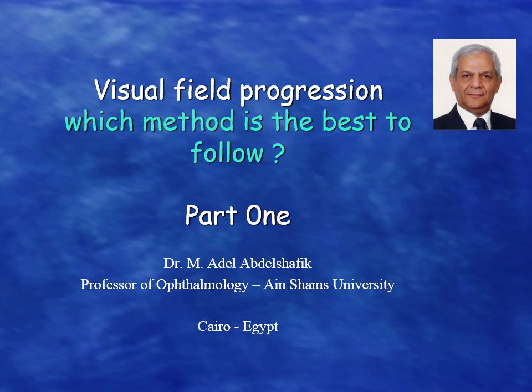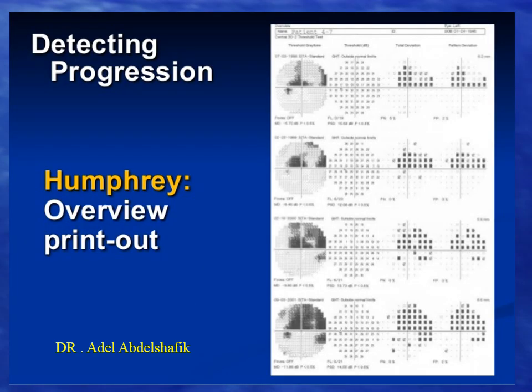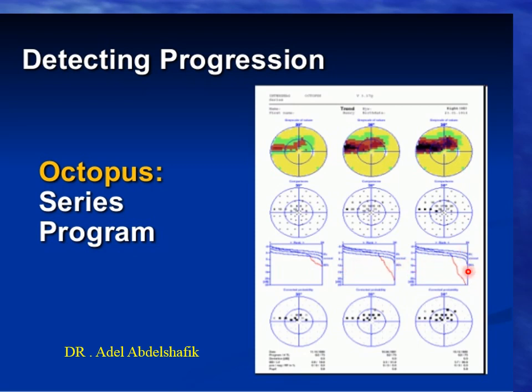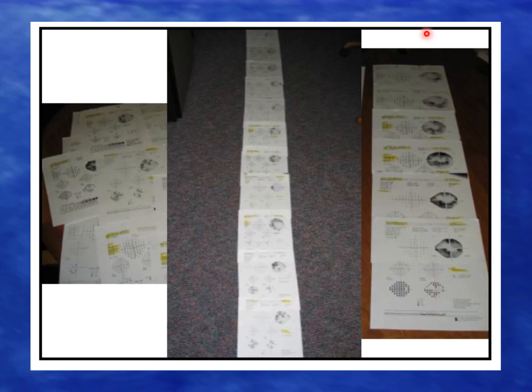This talk is about visual field progression. I'm going to show the different methods we can follow and then discuss which method is best. Most clinicians today depend on comparing the results of the visual field — if there appear to be more changes, they decide there is progression. So they put fields next to each other and compare.